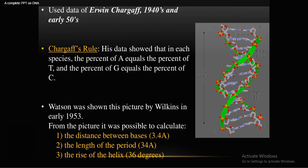Watson was shown this picture by Wilkins in early 1953. From this picture, it was possible to calculate the distance between bases, which is around 3.4 angstroms, and the rise of the helix.